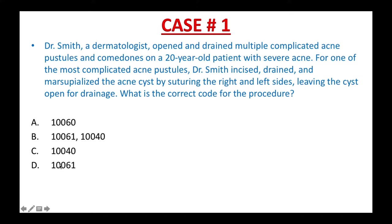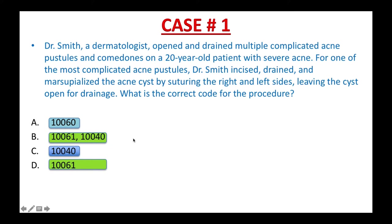B and D have the same code 10061, so they are in the same group. A and C have different codes, so they are in separate groups. Now you can tell there are three codes that you have to look up: CPT 10060, 10061, and 10040. Please pause the video, open your CPT book and look them up now.